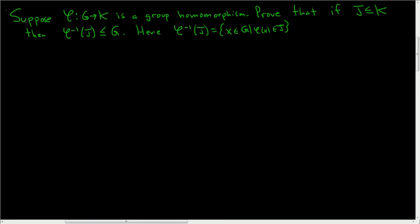Suppose phi from G to K is a group homomorphism. We have to prove that if J is a subgroup of K, then phi inverse of J is a subgroup of G. This set is called the inverse image of J — it's basically all of the elements in G that get mapped to J. So it's all the x's in G such that phi of x is actually in J. And we have to prove that it is a subgroup of G.